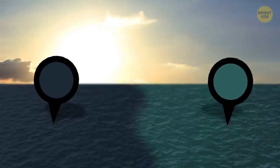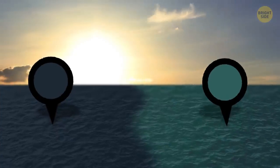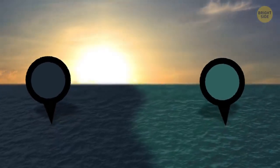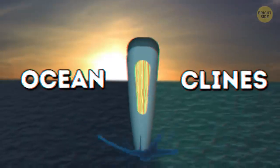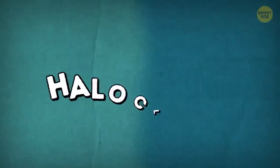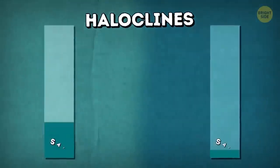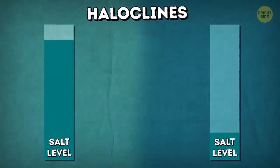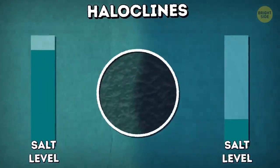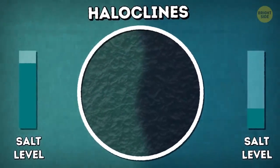One can see by their color that they are far from being the same. The borders between the two bodies of water with different physical and biological characteristics are known as ocean clines. Haloclines, borders between waters with different salinity, are the most spectacular, and this is what we see when the Atlantic and Pacific oceans meet.